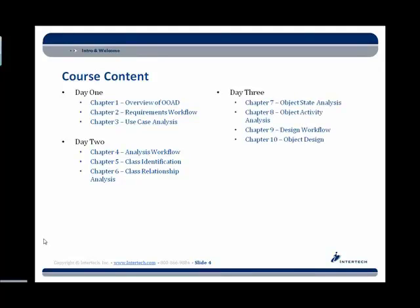On the third day, we move into object state analysis — what is the transition of different states for a given object over time. State diagrams are a common way of describing this. Chapter eight covers object activity analysis, looking at the behavior of the system; one of the most common diagrams produced here is the sequence diagram. Chapter nine steps back to compare the analysis phase and the design phase — what's the difference between these two, and in particular how does that relate to the Rational Unified Process. Chapter ten is where we firmly leave analysis and move into design, changing our analysis models into something that could actually be implemented with code.